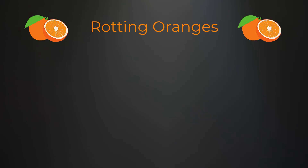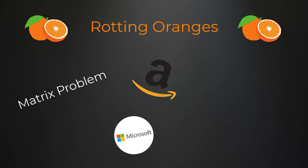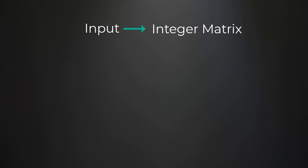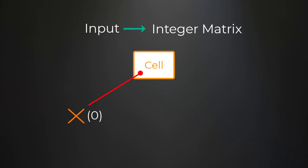What's up everyone, Michael here. Today we're going to go over a matrix problem called Rotting Oranges. This problem has been asked a lot at Amazon and Microsoft recently. It's definitely a little bit difficult but I'm going to explain it step by step. We are given an integer matrix where each cell has one of three values: zero which is an empty cell, or one which is a fresh orange, or two which is a rotten orange.